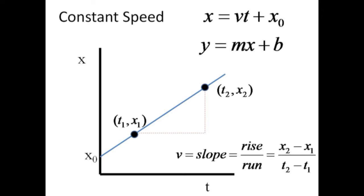That is, y equals mx plus b. m is the slope and b is the y-intercept. Here the slope represents the velocity or rate of change of position.